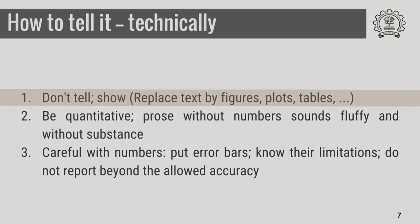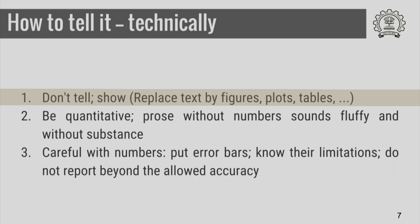There are also certain tricks or techniques one should use when writing technical material. The first is: do not tell, but show. Instead of writing one paragraph about what a particular experimental result is all about, if you can plot the relevant quantities and it shows a clear trend — so the reader can understand that as temperature or pressure increases, this is what happens to a particular property — that is a much better way of communicating the same information. You should replace as much text as possible with figures, plots, and tables so that people can read information in one go and appreciate it better.